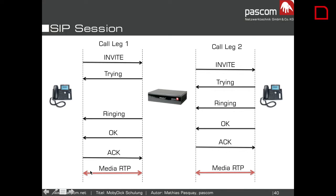From this point on we are sending media via RTP. The media goes from one phone to the server and from the server to the other phone. This is the standard behavior of Asterisk. If you have an Asterisk system like Moby Dick, the standard behavior is exactly like this — media from phone A to the PBX and from the PBX to the second phone. The signaling is done between Asterisk and the phones, and the RTP stream also runs over Asterisk — but not in every case.